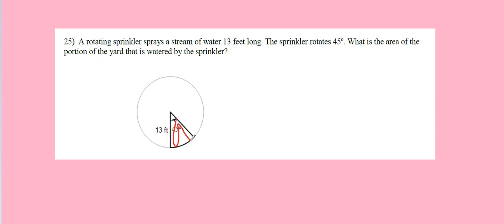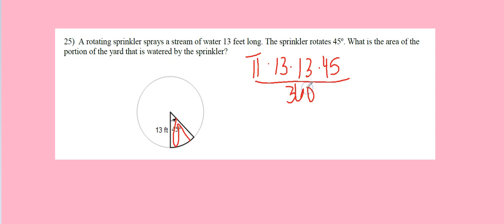So again, it's just area: pi times the radius times the radius times the angle measure divided by 360. Using the calculator: 3.14 times 13 times 13 times 45, divided by 360, equals 66.33 feet squared.